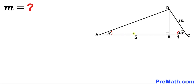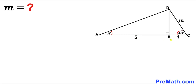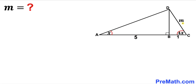Welcome to pre-math. In this video we have got these two right triangles ABD and CBD put together as you can see in this diagram, such that side length AB is 5, side length BC is 1, side length CD is M. Furthermore, angle DAB is X and angle BCD is 4 times X. Our task is to calculate the value of M.